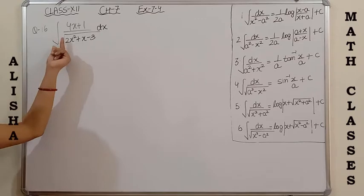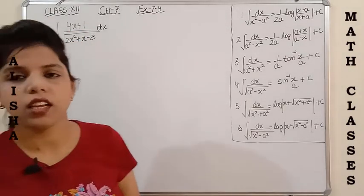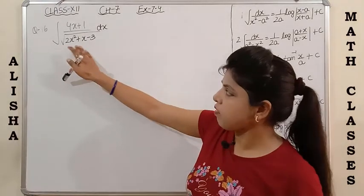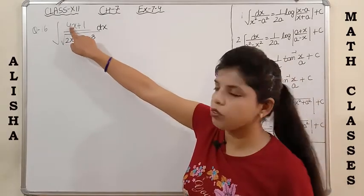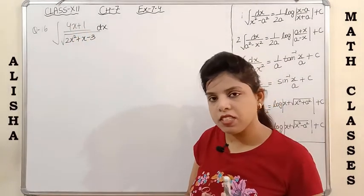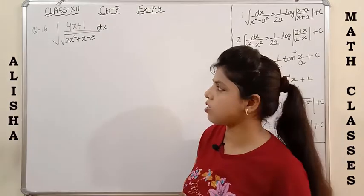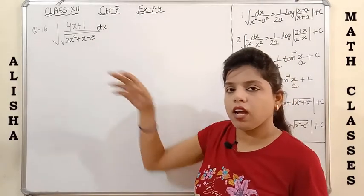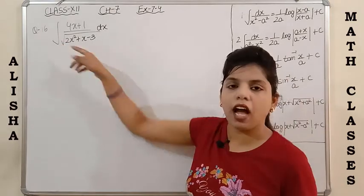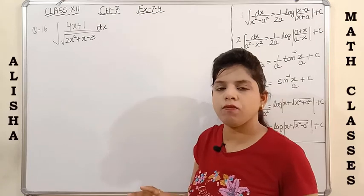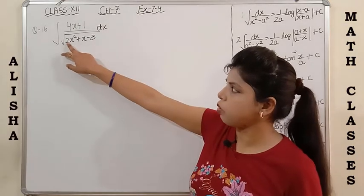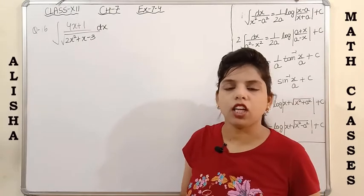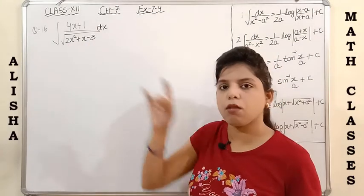Question 16: integrate (4x + 1)/√(2x² + x - 3). Although this looks like linear over quadratic, notice that the derivative of 2x² is 4x and the derivative of x is 1 — so the numerator is exactly f'(x). This means it's in the form f'(x)/f(x), so we don't need the linear equation trick. Instead, let 2x² + x - 3 = t² to simplify.